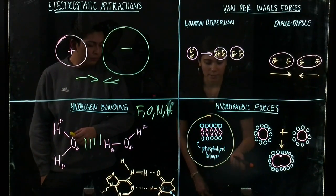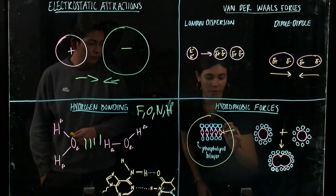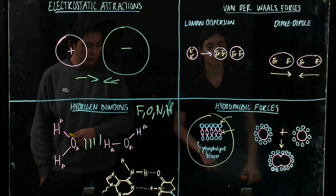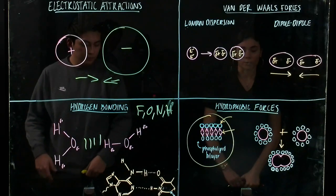Phospholipids orient themselves tail to tail, which are hydrophobic, in order to make sure that the hydrophilic ends are the only ones that are facing the water molecules.